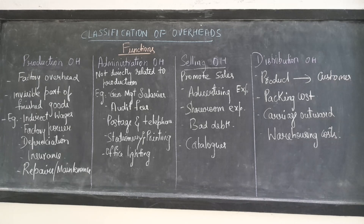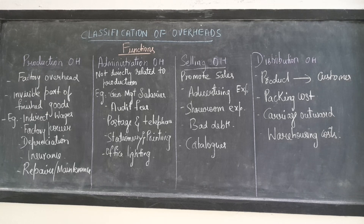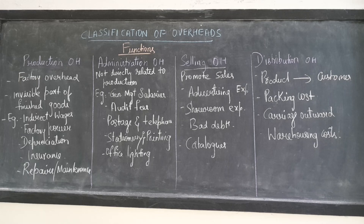Administration overhead is not directly related to production — it is indirectly related to production. For example, the general management salary: the management will not go and work in the factory, but his presence is required. He will be sitting in a different block. So his salary, auditing fees, postage and telephone charges, stationery and printing charges, and office lightings — these all come under administration overheads.